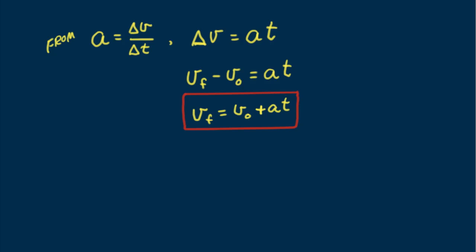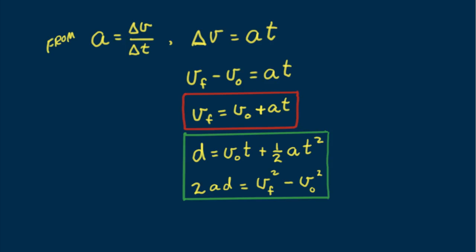There are two other equations that are useful in solving kinematic problems. This one, d equals V sub 0 T plus 1 half A T square. This eliminates final velocity from the equation. Here's another one. 2 times acceleration times distance equals final velocity squared minus initial velocity squared. This equation eliminates time from the equation. We put these important equations in a green box.